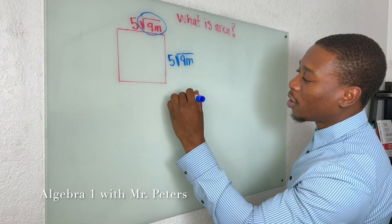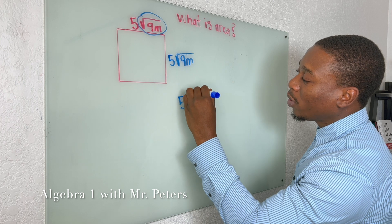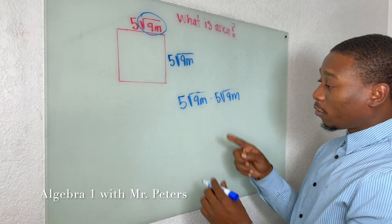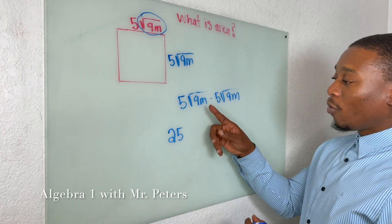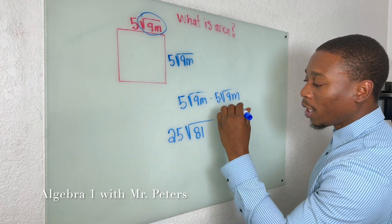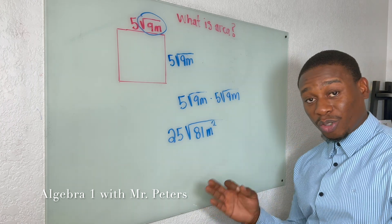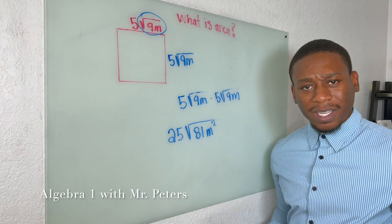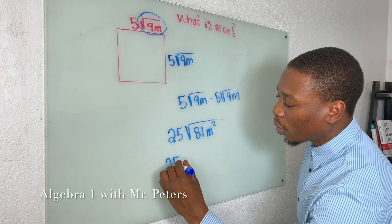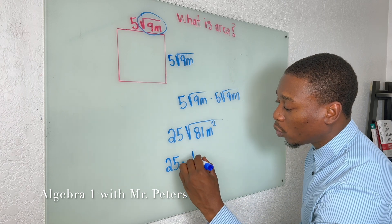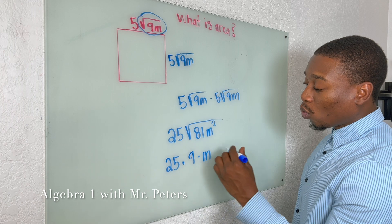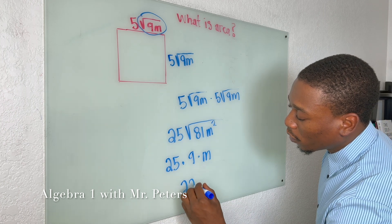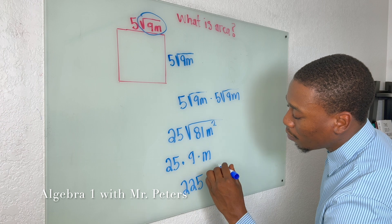But just don't get it confused with perimeter. So we know area is length times width. And this is a very simple problem if you just remember the foundations, meaning coefficient with coefficient. 5 times 5 gives me 25. Radical with radical, so 9 times 9 gives me 81. M times M gives me M². But this is the trick part. They may have this answer on the quiz or test or EOC. This would be wrong. We have to break it down, right? Remember, 81 is a perfect square. So this is 25 times the square root of 81, which is 9, times the square root of M², which is M. So now when we break this back down, we're going to get 25 times 9, which will give us 225 meters squared.